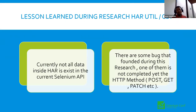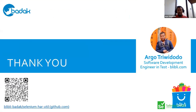Lessons learned during this research: first, not all data inside the HAR exists in the current Selenium API, so we need workarounds for some data. In previous Selenium versions, some HTTP methods like POST, GET, PATCH were incomplete, but in the current Selenium this is already fixed. If you want to try the HAR utility, scan our QR code or visit the GitHub page. You can contact me via LinkedIn or email. I'm Argo Drito from bri.com — back to you Naresh.